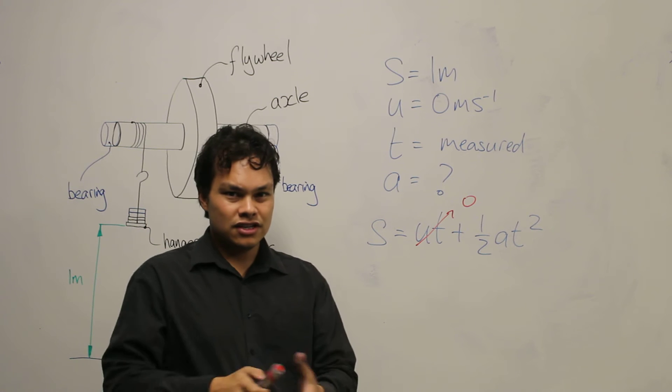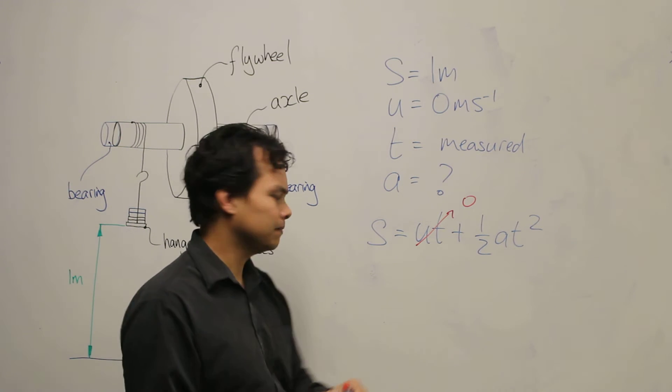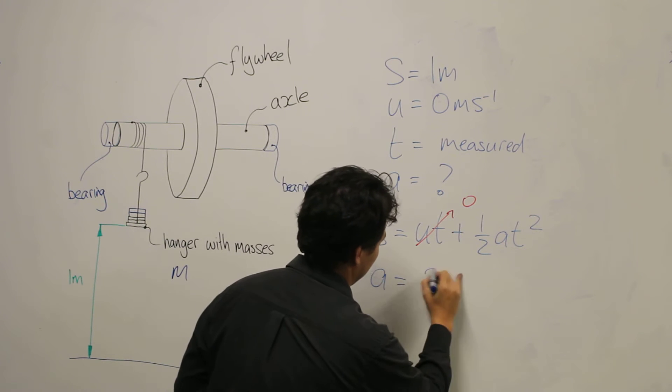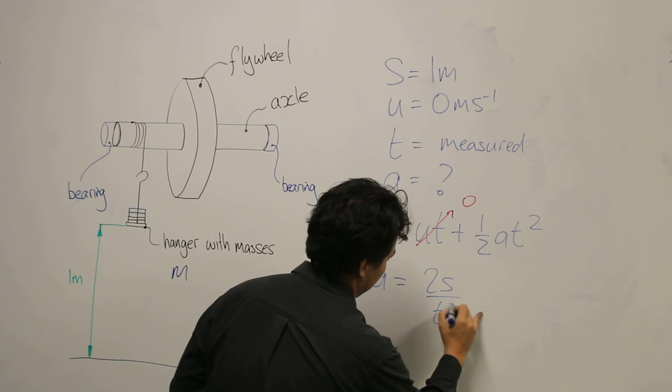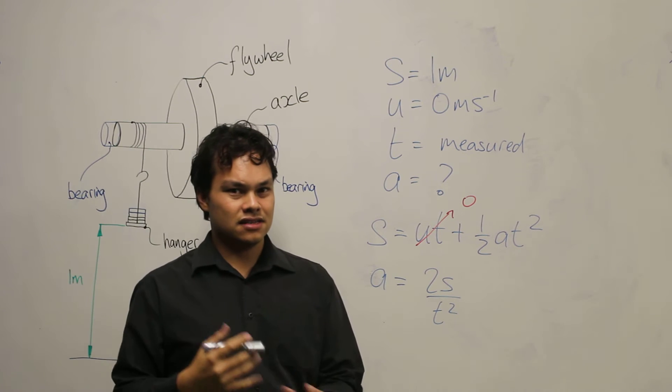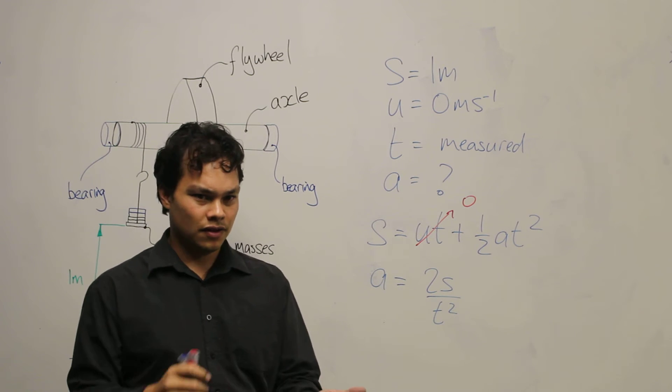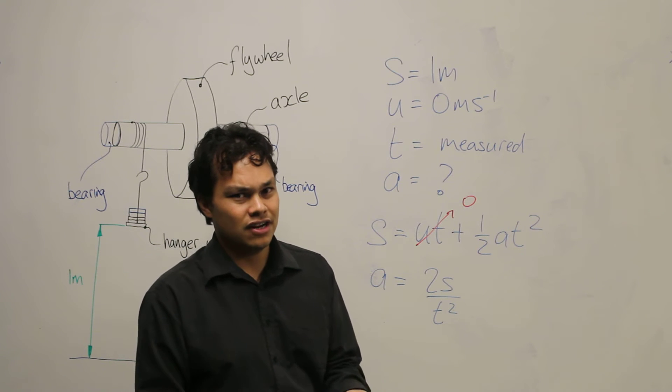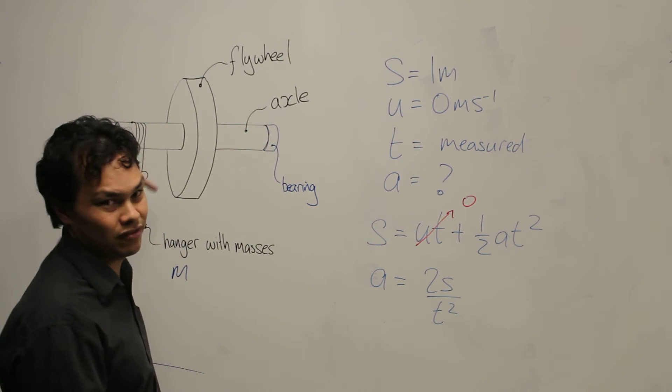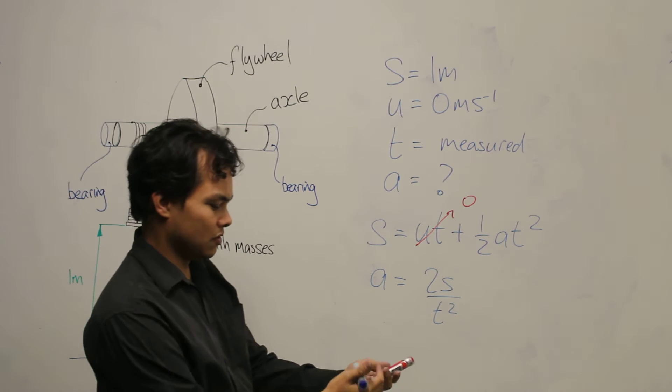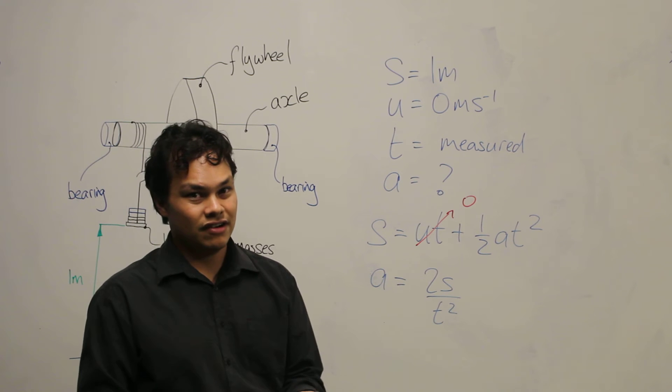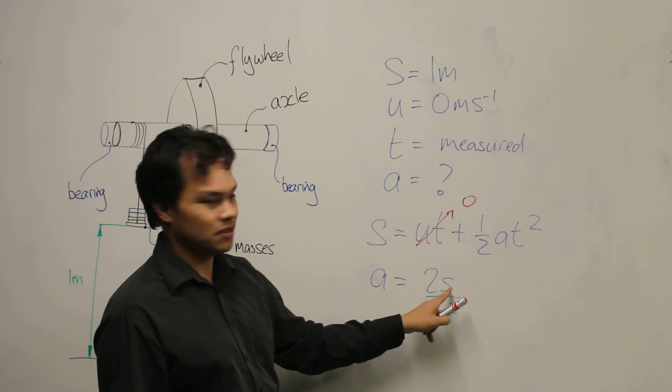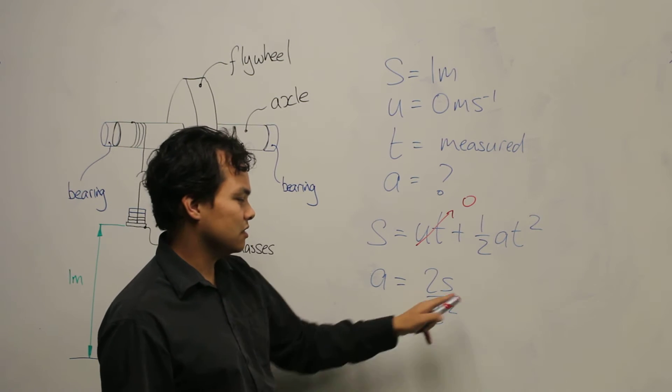We can rearrange this equation for acceleration. And this gives us the acceleration of the component and also the tangential acceleration of the axle that's being rotated. So we can write the tangential acceleration equal to two times the distance which happens to be one divided by T squared.